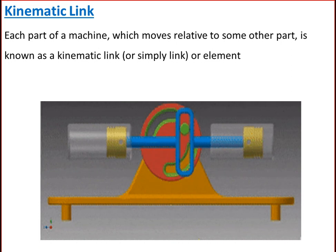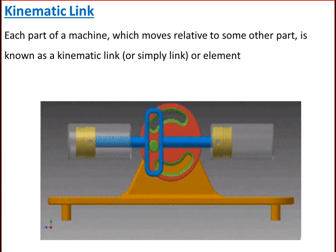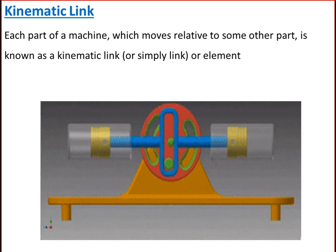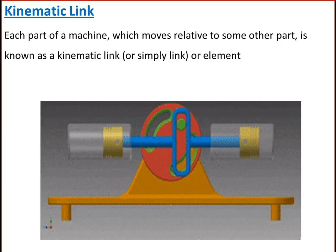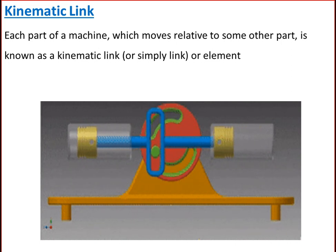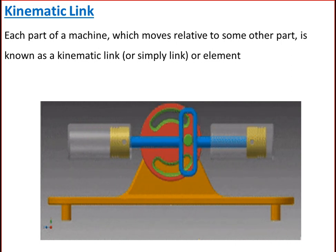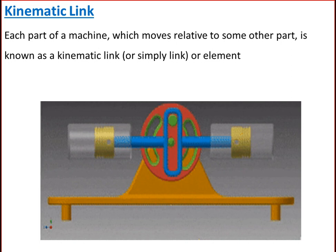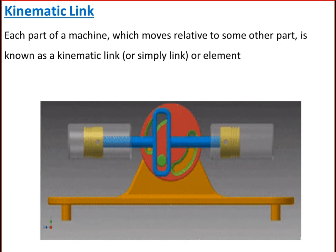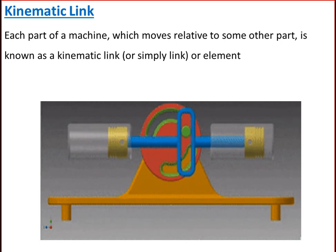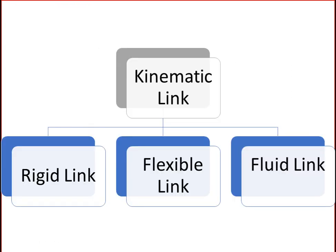What is a kinematic link? Each part of a machine which moves relative to some other part is known as a kinematic link, or simply a link or an element. There are various types of kinematic links, classified as rigid link, flexible link, and fluid link.